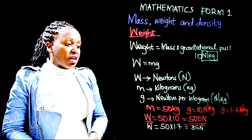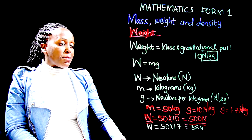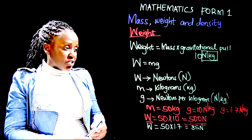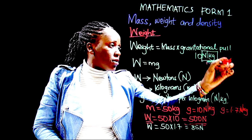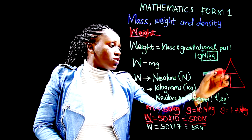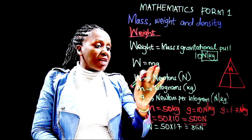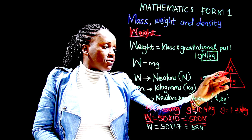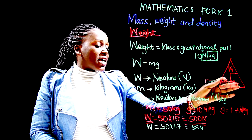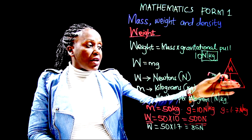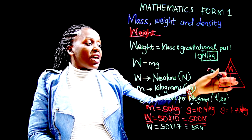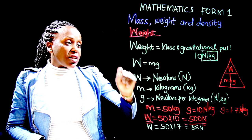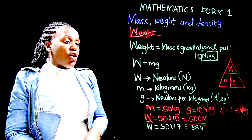This formula can be used based on what is given. We can create a triangle connecting weight, mass, and gravitational pull. Weight equals mass times gravitational pull. Mass equals weight over gravitational pull. Gravitational pull equals weight over mass. Based on what the question asks, you can always use this triangle to calculate any of the three quantities.